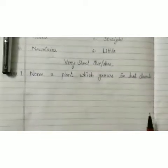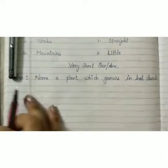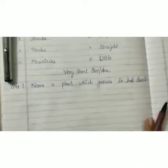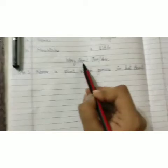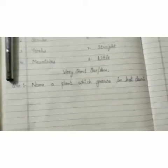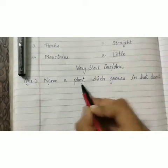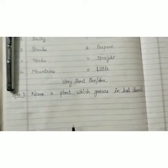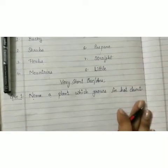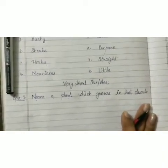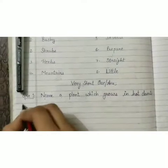Now today we are starting with our very short question answer. Open your notebook and start writing this heading: very short question answer. Question number one: name a plant which grows in hot deserts. You have to tell the name of a plant which grows in hot deserts. All of you know the answer, right?